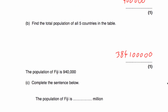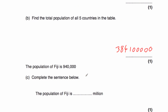Part C says the population of Fiji is 940,000. Complete the sentence — the population is so many million. Well, it isn't actually a million; it's a bit smaller than a million. It would be 0.94 million. So the population of Fiji is 0.94 million.